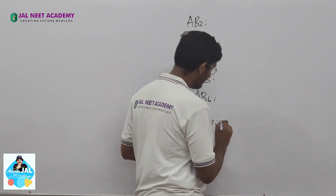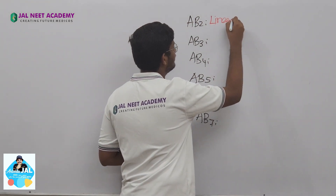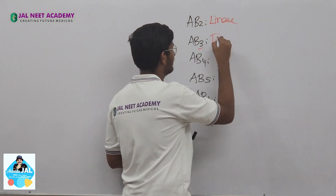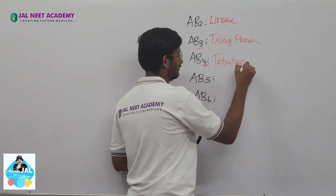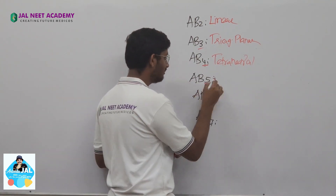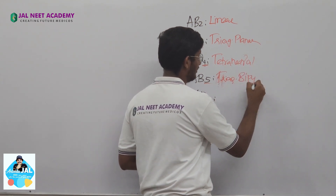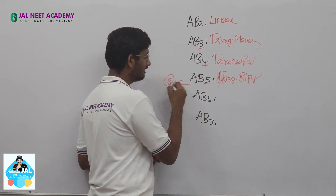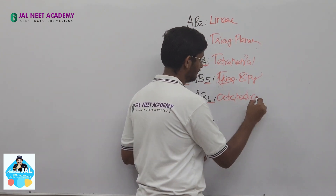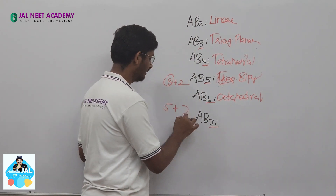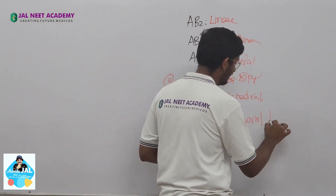Looking at the shapes: AB2 is linear. AB3 is trigonal planar — you can see the triangular structure. AB4 is tetrahedral. AB5 is trigonal bipyramidal. AB6 is octahedral. AB7 is pentagonal bipyramidal — 5 is pentagonal and 2 is bipyramidal.